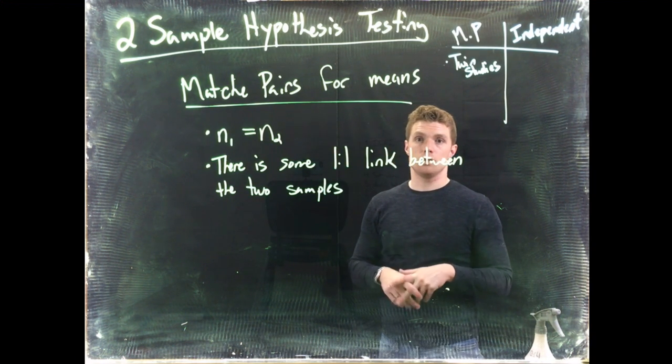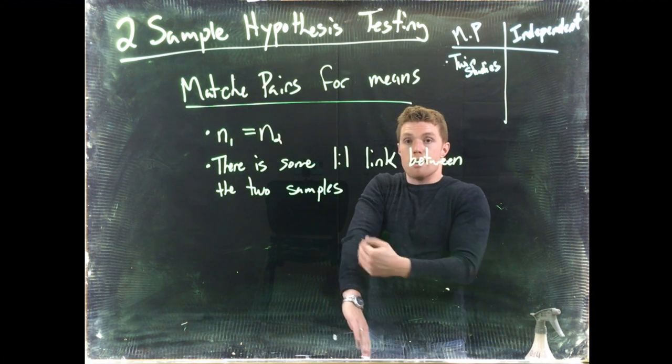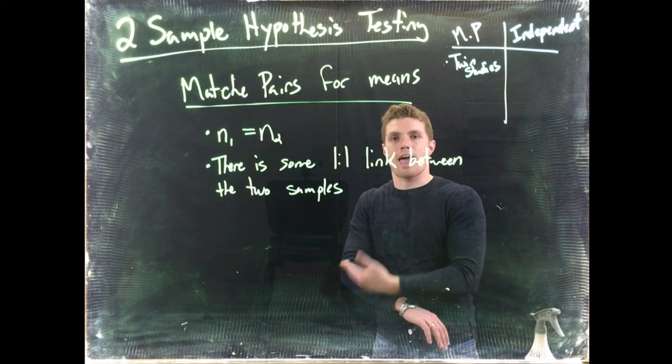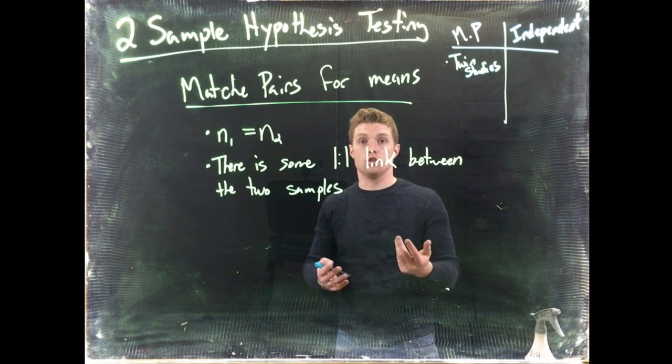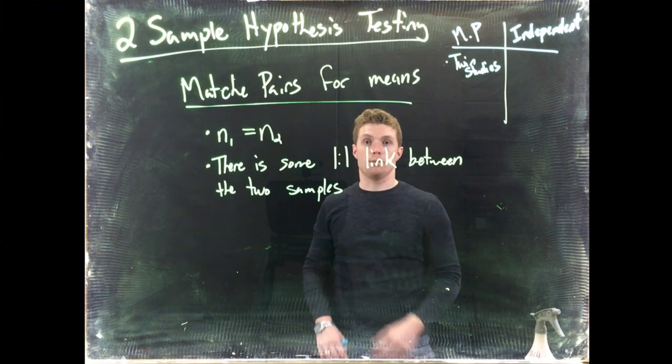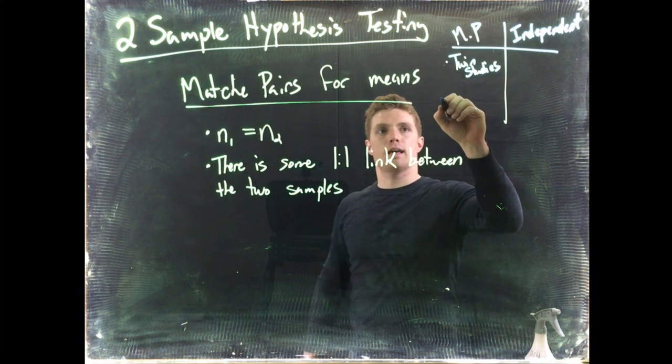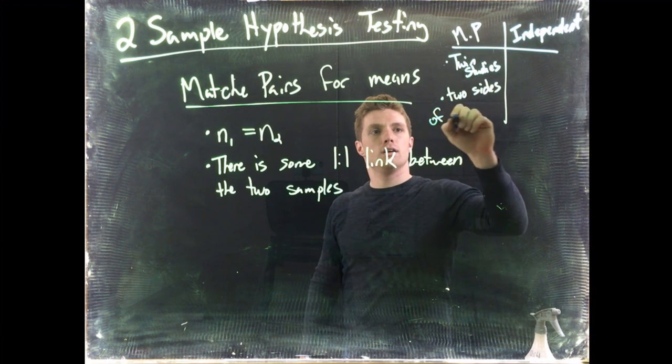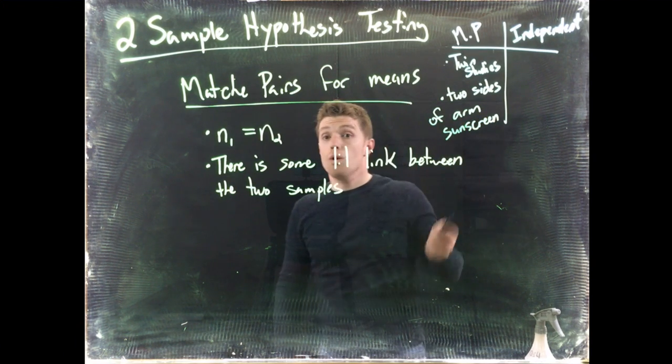If you compared how my skin reacted to having the sunscreen on versus somebody else who didn't wear the sunscreen, there's a lot of variability. We could make it matched pairs. What we do is like put sunscreen on half of my arm and then compare how much damage from the UV rays that I'd get on the side that had sunscreen versus the side that did not have sunscreen. Then there'd be a one-to-one link between the two samples. It would be my arm, my arm would be the link between those two samples.